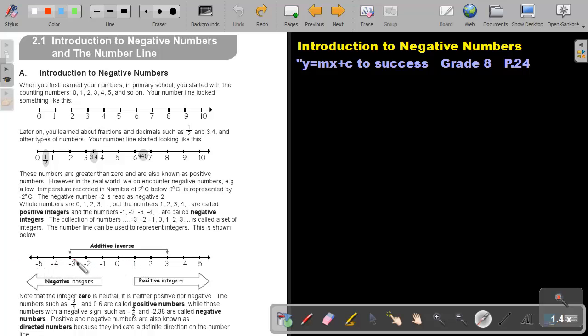Take note that 3 and negative 3 is called additive inverse. So negative 2 and 2 will also be called additive inverse.